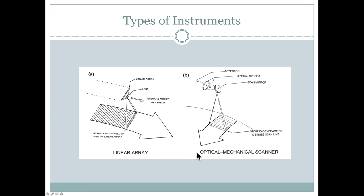So this would be a linear array, and this would be an optical mechanical scanner. This would be a push broom type of instrument, and this one over here would be the whisk broom type of instrument.